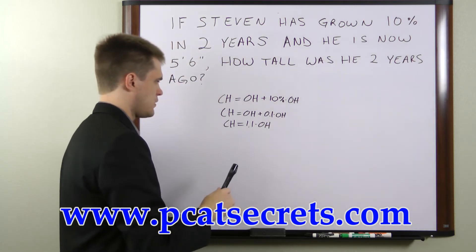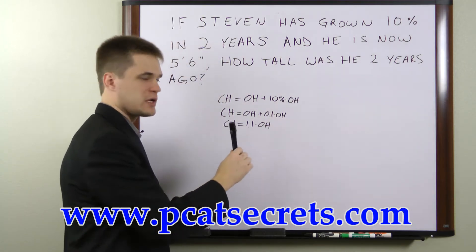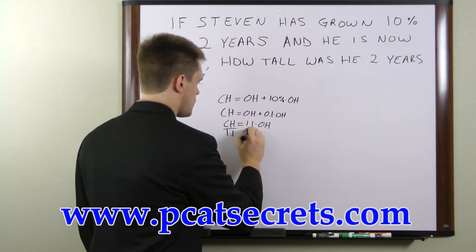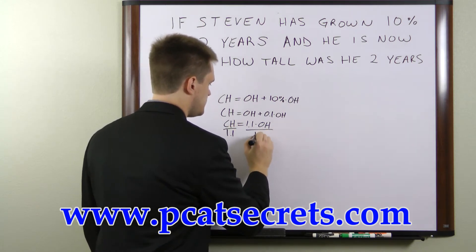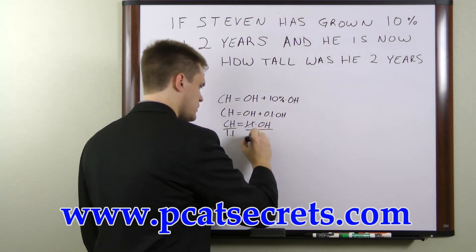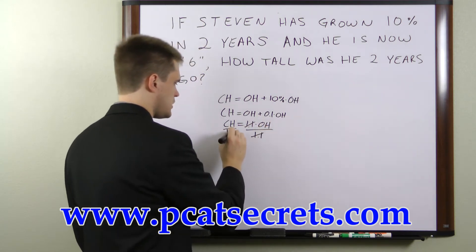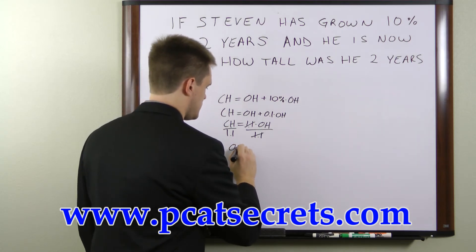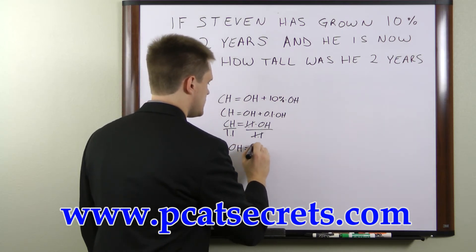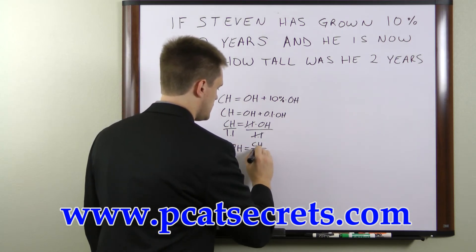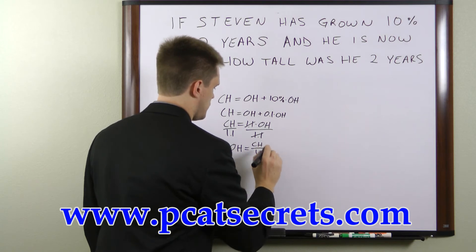And now to solve for OH, all we have to do is divide both sides of the equation by 1.1. This 1.1 will cancel and what we're left with is the original height is equal to the current height divided by 1.1.